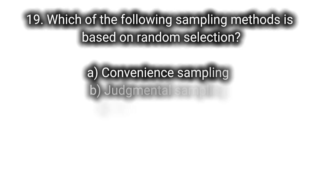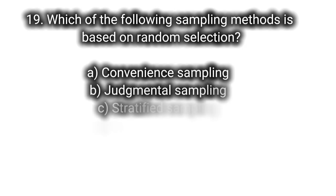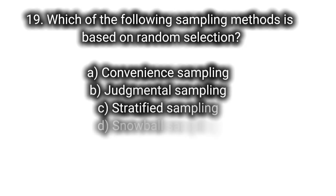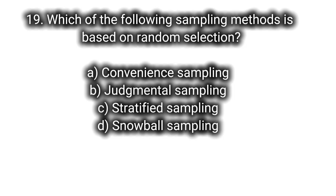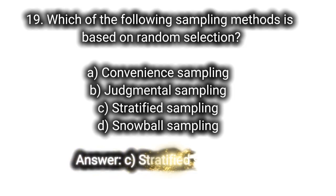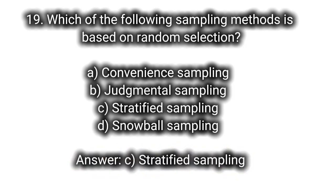Q19: Which of the following sampling methods is based on random selection? A. Convenience sampling, B. Judgmental sampling, C. Stratified sampling, D. Snowball sampling. Answer: C. Stratified sampling.